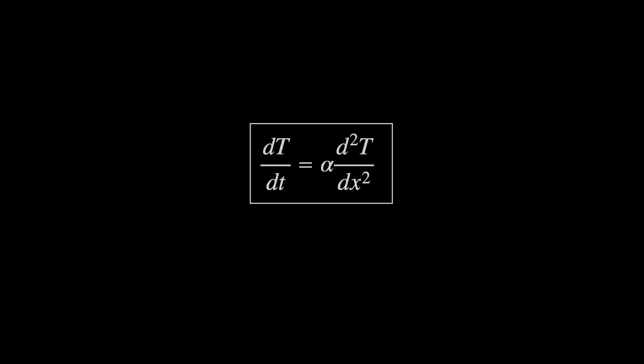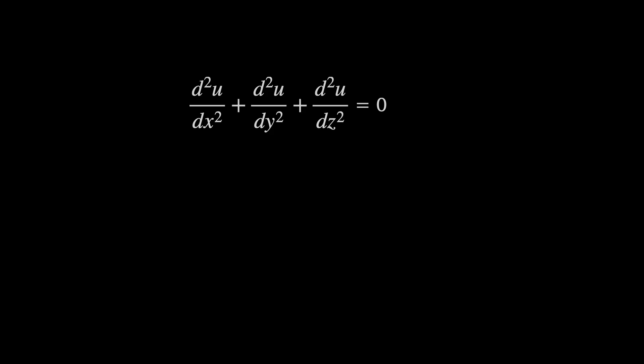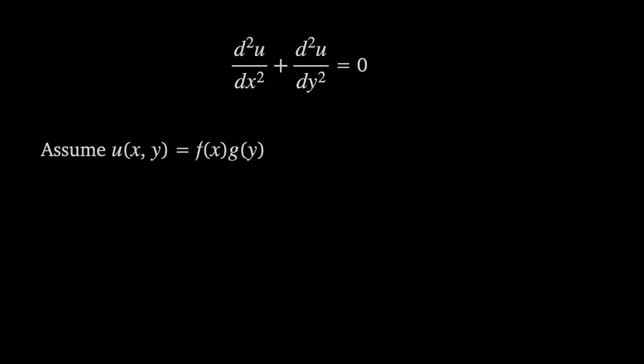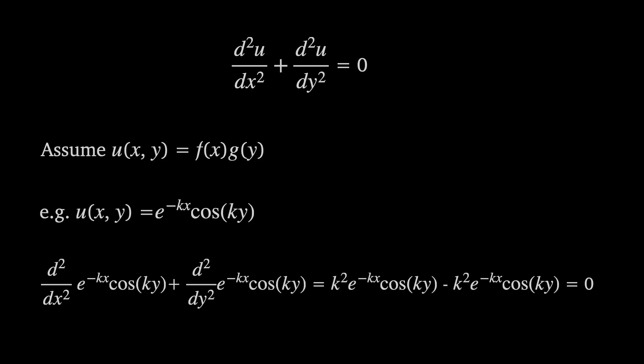Laplace had been studying a simpler partial differential equation and had found a solution that was useful to Fourier. For some function u we have the sum of its second derivatives is equal to 0. You might notice that it's like the heat equation but it's got no time component. Some of you who have studied vector calculus might also know there's a shorthand for this equation. The Laplacian of u equals 0. Trying to solve the two-dimensional version, Laplace found a useful approach was to look for solutions of the form of some function f of x only times some function g of y only. For example, if we have u of x and y is equal to e to the minus kx times cosine of ky we can plug this into Laplace's equation and show that it is a solution.